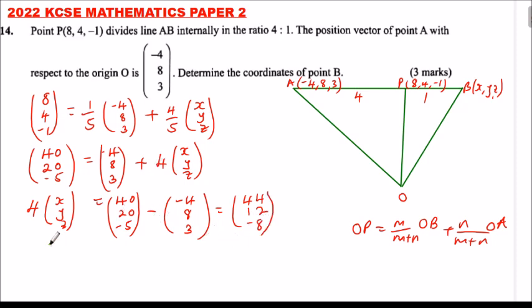We divide by 4, so we will be left with X, Y, Z is equals to 1 over 4 of 44, 12, and minus 8.